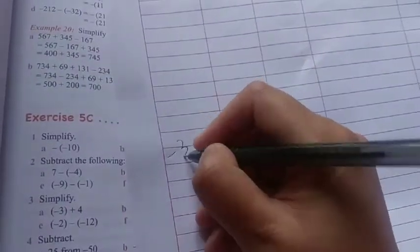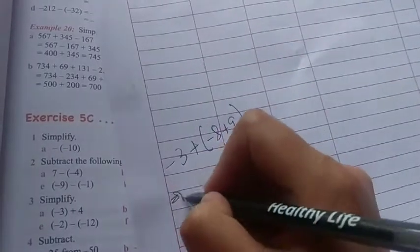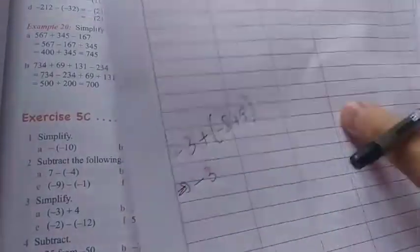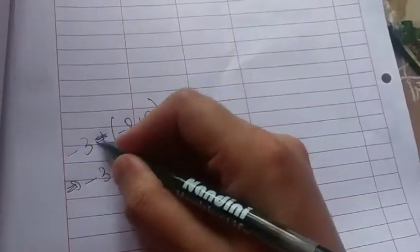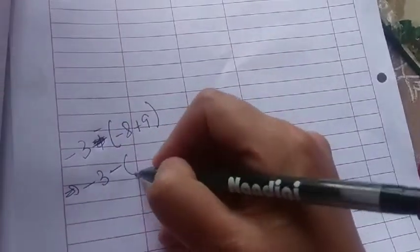It is minus 3 plus minus 8 plus 9. So it will be minus 3. Was it plus? No. It was minus there. It will be minus and it will be plus 1.